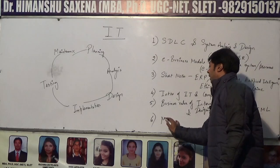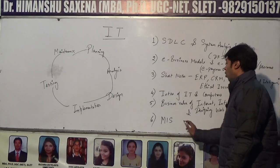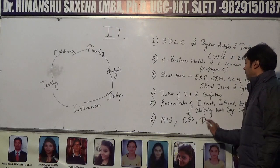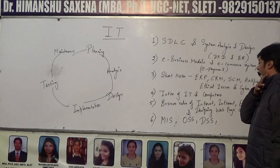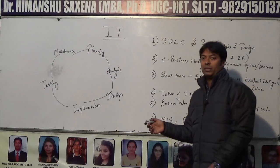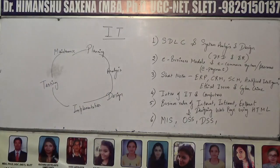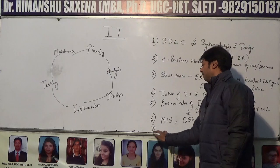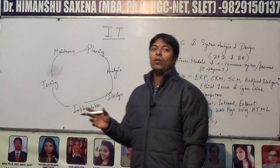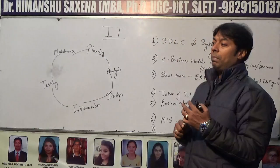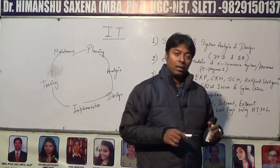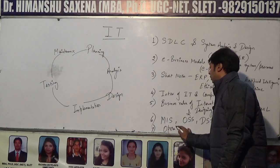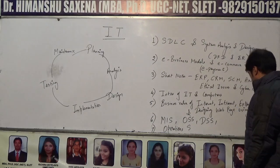After internet, intranet, and extranet, you must go through the various components of MIS — Management Information System. MIS includes Operational Support Systems and Decision Support Systems. These kinds of information systems are very important. Then there is MS Office, which includes MS Word, MS PowerPoint, MS Excel, and MS Project.